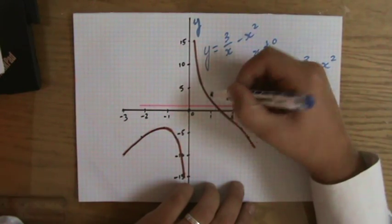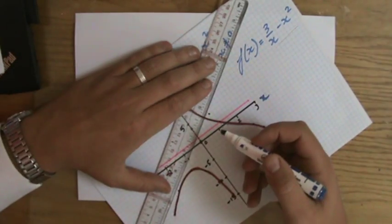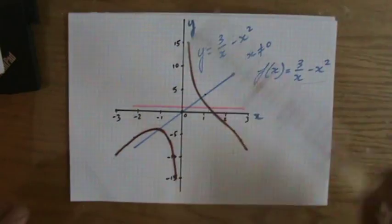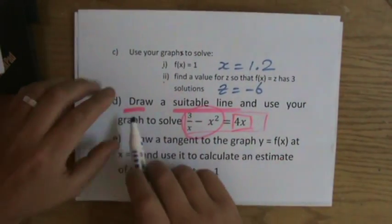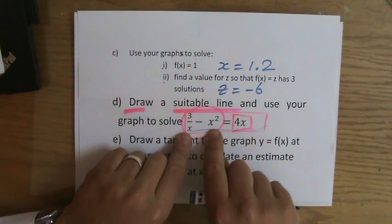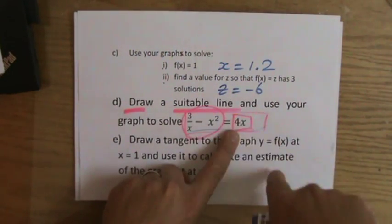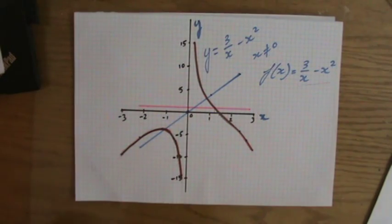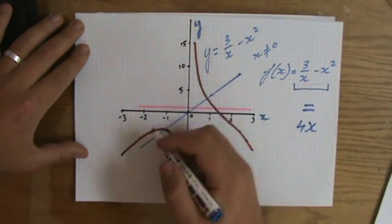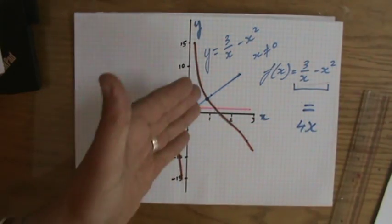The line y = 4x has a y-intercept at the origin and a gradient of 4 — one unit to the right, four units up. I'm going to draw that line now using a sharp pencil and a ruler. To summarize: the question tells me to draw a suitable line. The left part of the equation is my graph, and the right part is the line I draw.